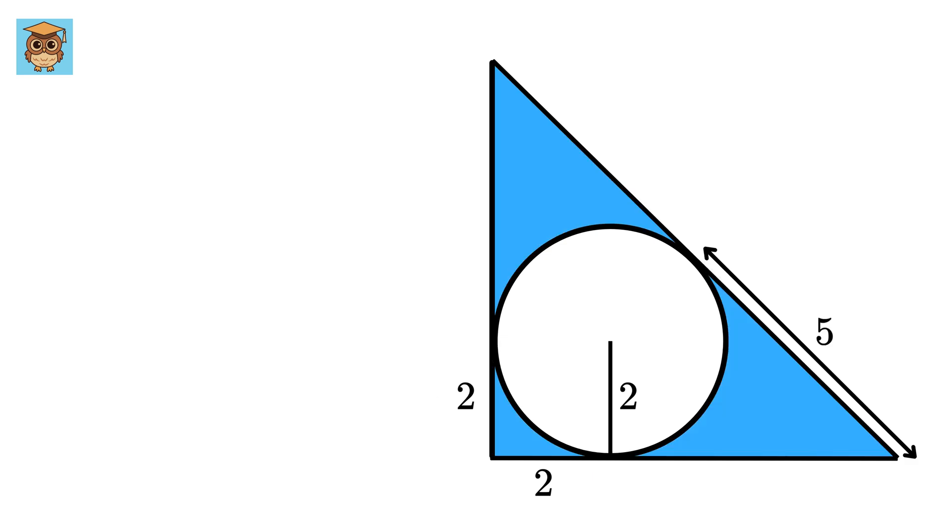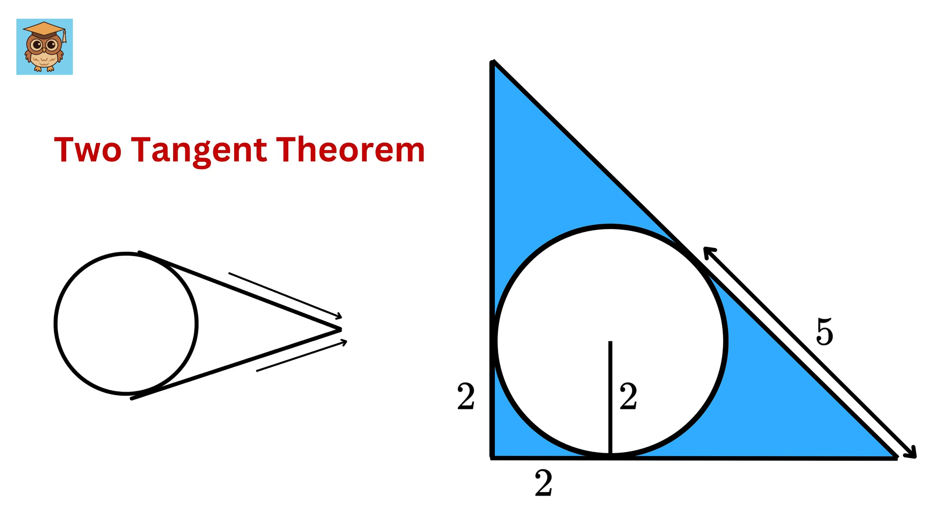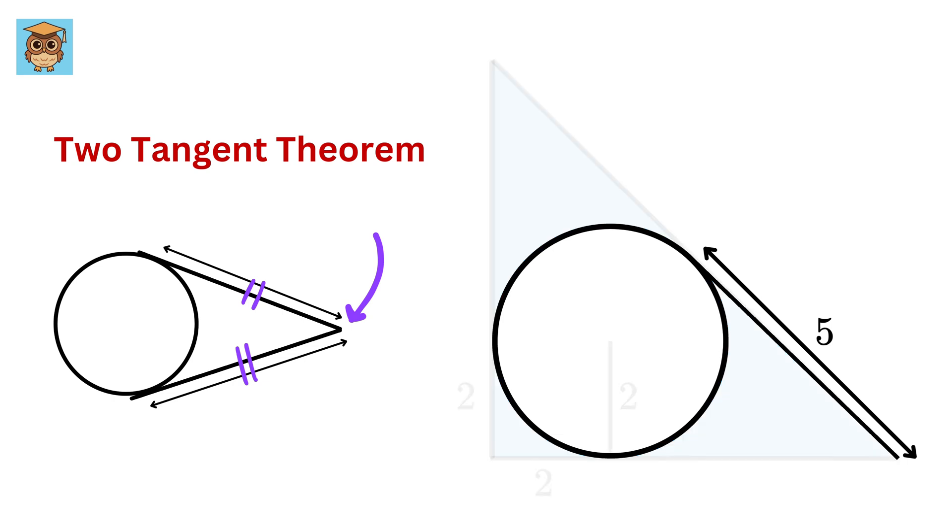Now here comes the magic. We will use the two-tangent theorem, which states that the lengths of two tangents drawn from the same external point to a circle are equal. Now this is a tangent, and this is also a tangent to this circle, and they are drawn from the same external point, this one.